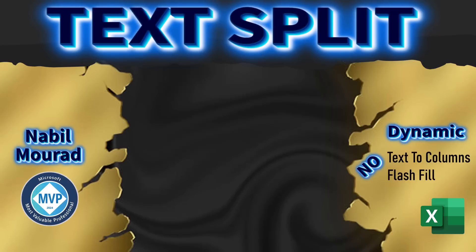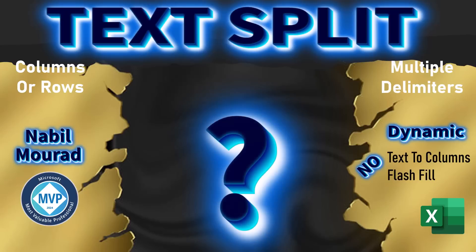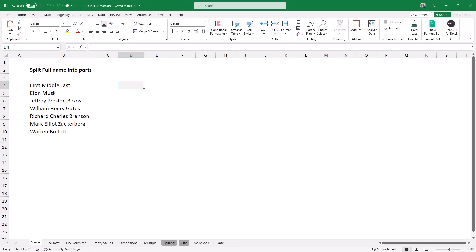I am Nabil Murad, and in this tutorial I'll guide you through using the TEXTSPLIT function to break a text string into columns, rows, or both — even with multiple delimiters. We'll also explore how to make the function spill in two directions and filter the source text, and how it can help with date issues.